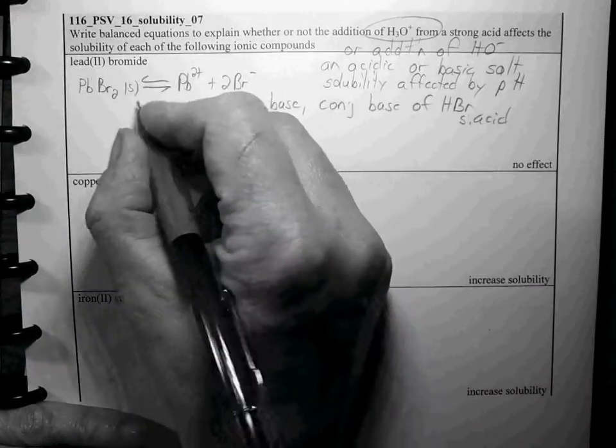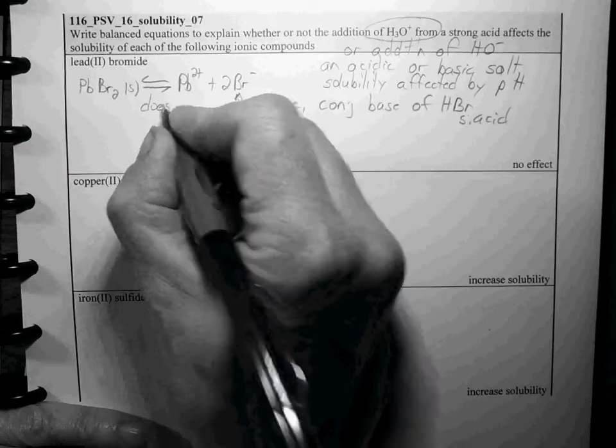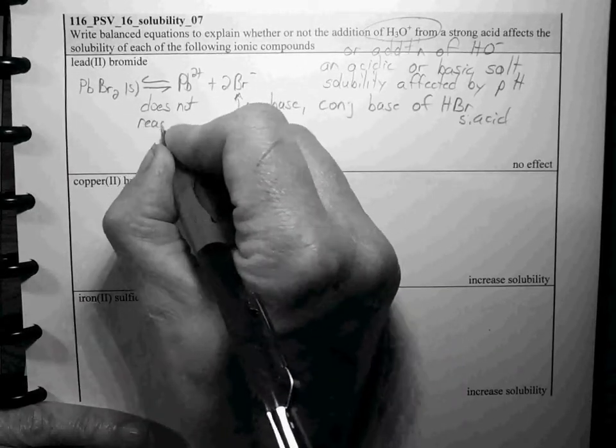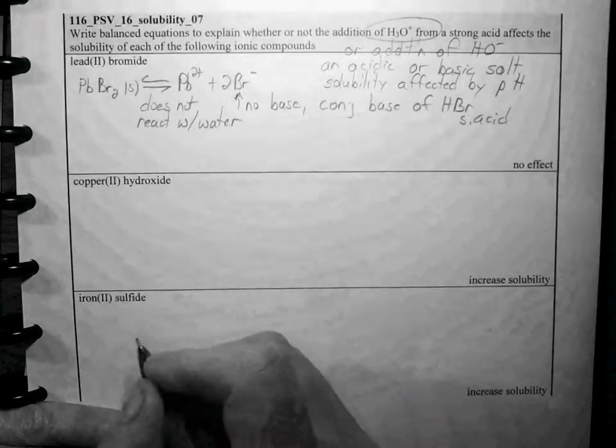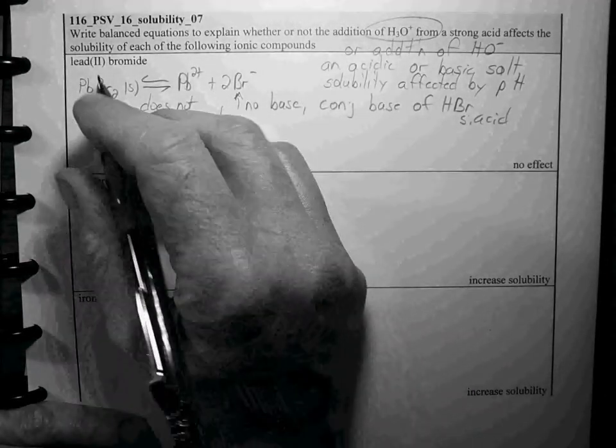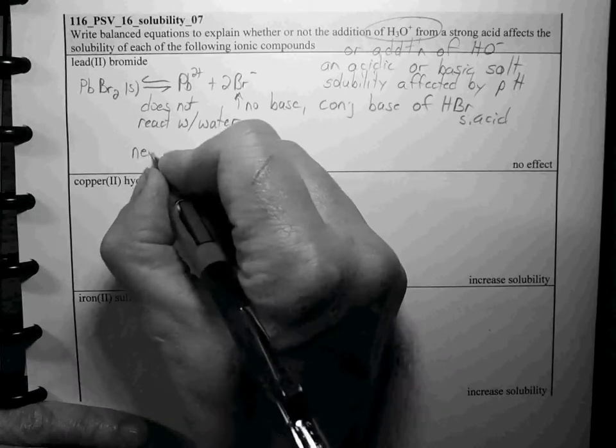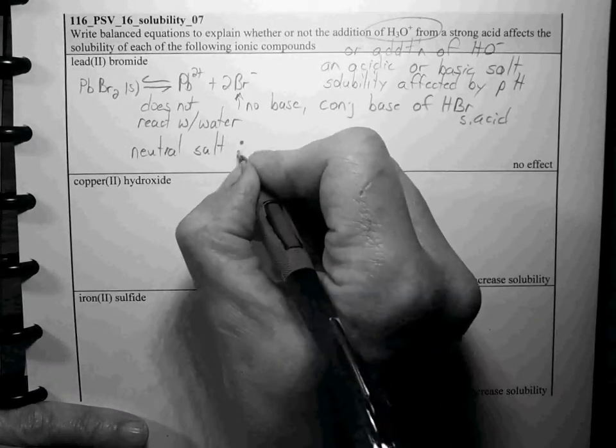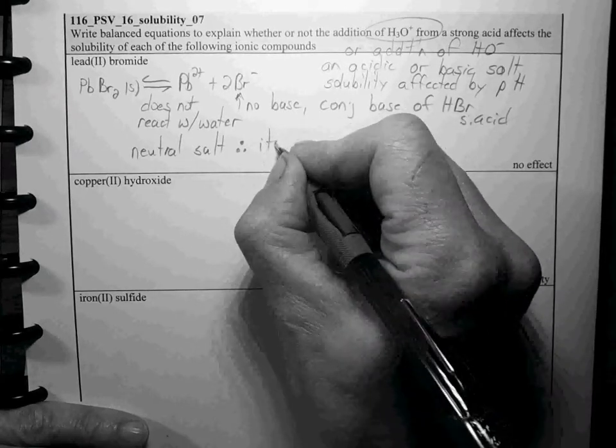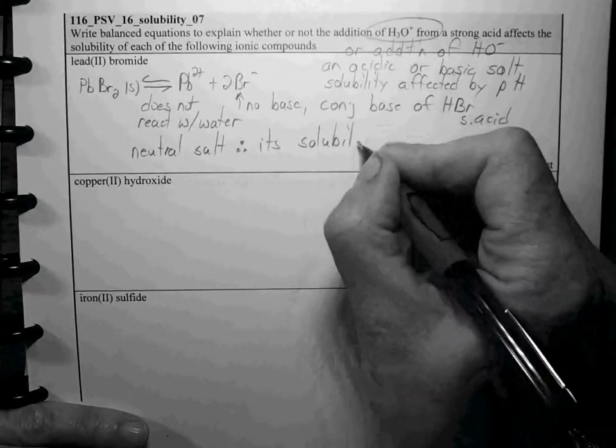Pb2+ does not react with water either. So this salt is a neutral salt and therefore its solubility is unaffected by pH.